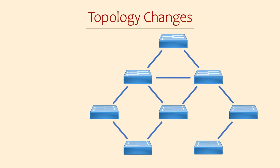We've got our nice new topology. Spanning Tree has learned where the root bridge is, it's learned the cost of each path, and it knows which links to block. But what happens when the topology changes? Perhaps links are added or removed, or there's hardware failures in the switches. The first thing Spanning Tree needs to do is to detect these changes.